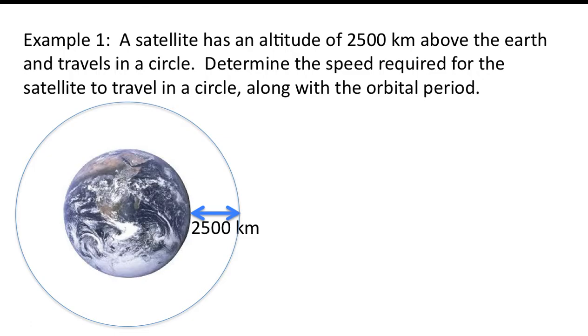So if this was a question on a physics test, it would look something like this. A satellite has an altitude of 2,500 kilometers above the Earth and travels in a circle. Determine the speed required for the satellite to travel in a circle, along with the orbital period.